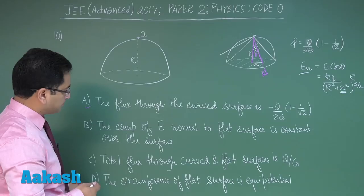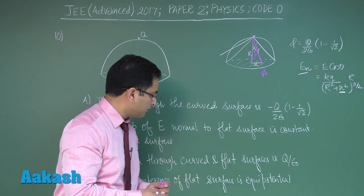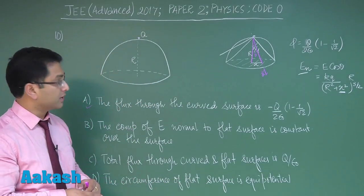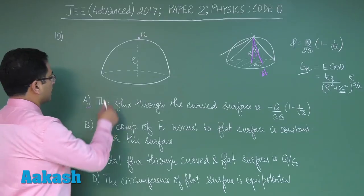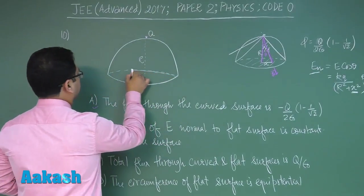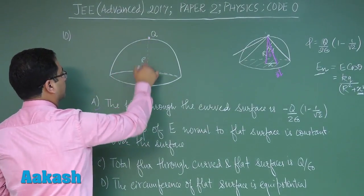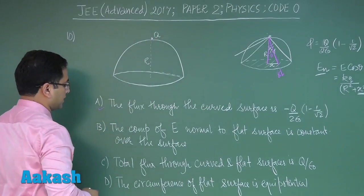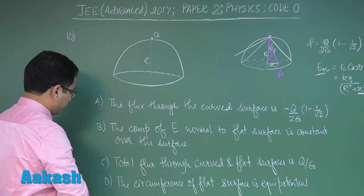Option D: the circumference of flat surface is equipotential. That's right because the flat surface circumference, all points are equidistant from this particular point, so therefore it has to be equipotential.